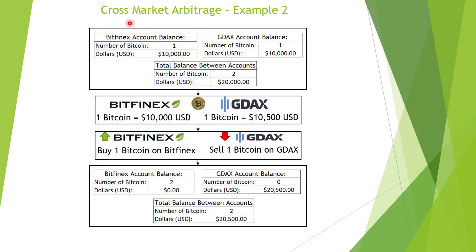A more realistic example is called cross-market arbitrage. The way this works is you have money parked in two different exchanges. Let's say you had $10,000 USD in Bitfinex and $10,000 USD in GDAX, and maybe one Bitcoin in each exchange as well. So you've got two Bitcoins total and $20,000 total. This is really your net total between both accounts — and what you want to see is either the number of Bitcoins go up or the number of USD go up. You don't care what happens in an individual exchange; you want your total amount to increase.